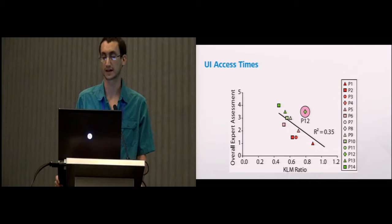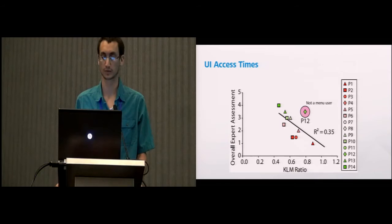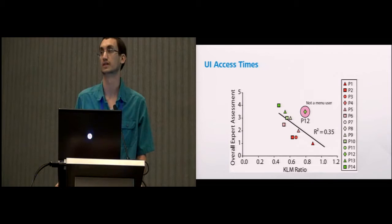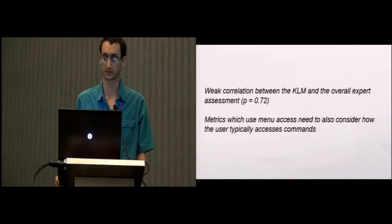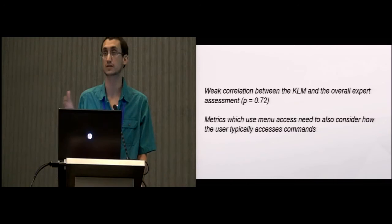We see one potential outlier there. When we looked further at P12, someone who had a high expertise level but wasn't as efficient with menu access, we found that it's someone who didn't really use the menus very often. Remember, in AutoCAD there's multiple ways to access a command. It shows us two important things: one is that you can potentially use menu access times or UI access times to assess expertise, but it's really important to also consider for each particular user what their typical UI access methodology is.